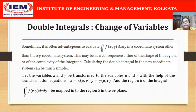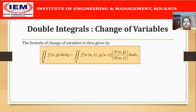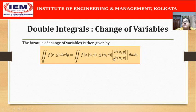Let the variables x and y be transformed to a new set of variables u and v with the help of transformation equations x equal to some function of u,v and y equal to another function of u,v. Suppose that the region R of integration in the xy plane is mapped into the region S in the uv plane. The formula for the change of variables is: the double integral of f(x,y) dx dy over R equals the double integral of f(x(u,v), y(u,v)) times the modulus of ∂(x,y)/∂(u,v) du dv over S.